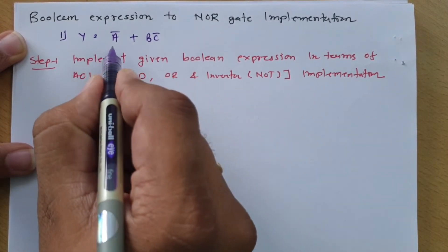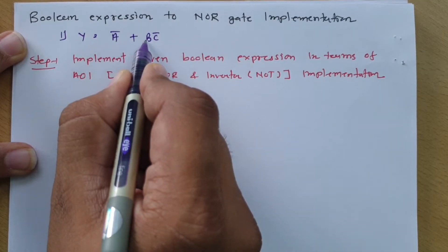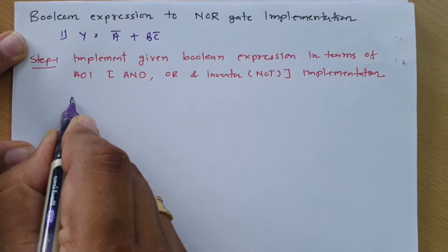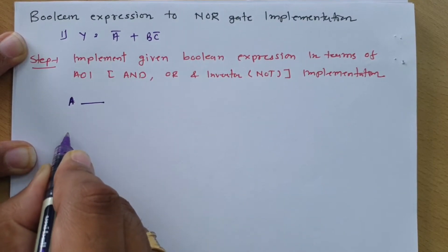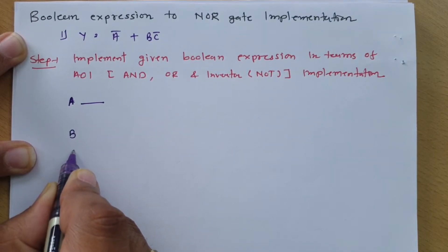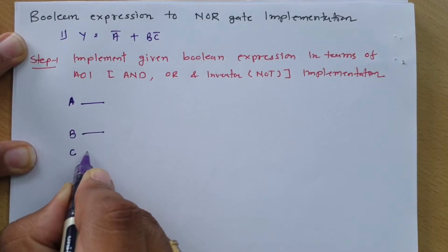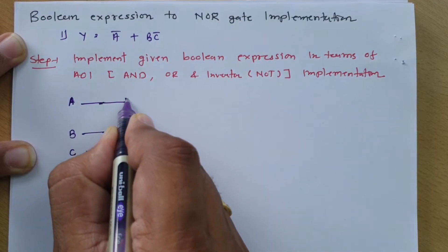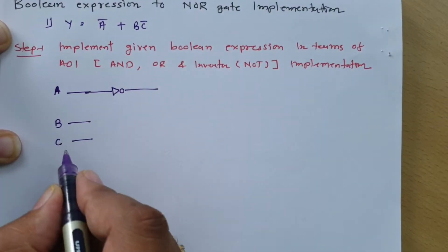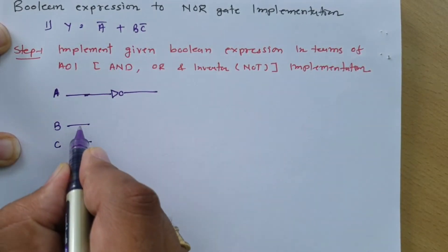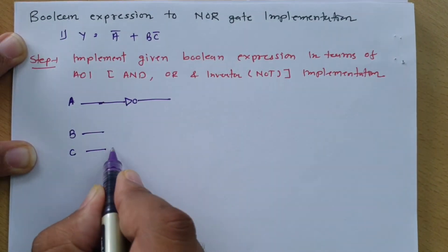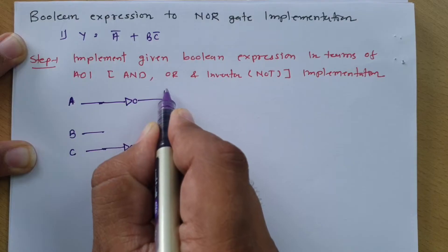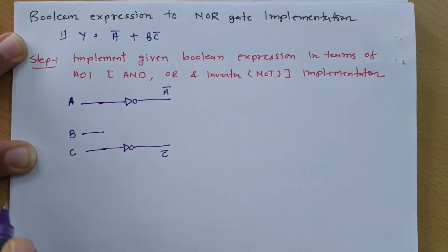We have three variables as input: A, B, and C. So we have terminal A, terminal B, and terminal C. In the output we have ā, so ā can be obtained by having a NOT gate here. Then we have B directly, and C̄ which we can get by having an inverter. So here we will have ā and here we will have c̄.